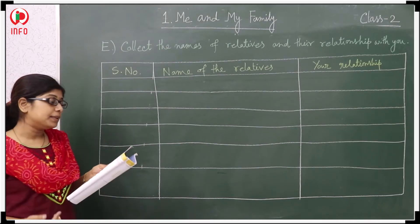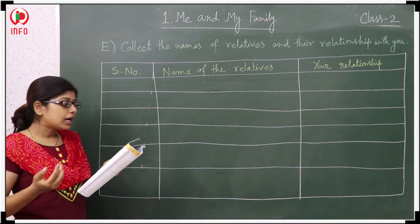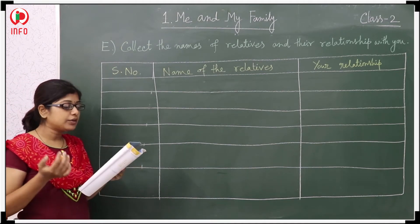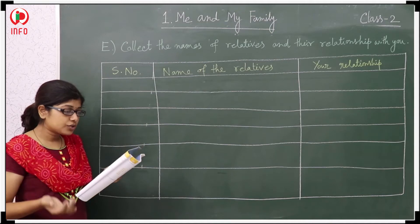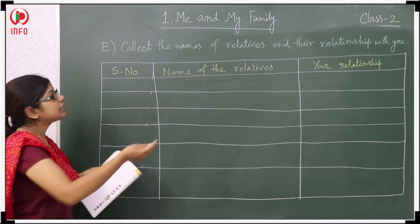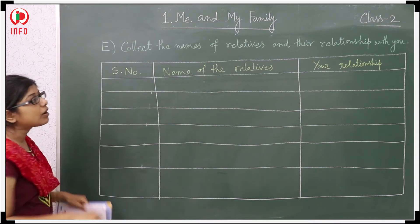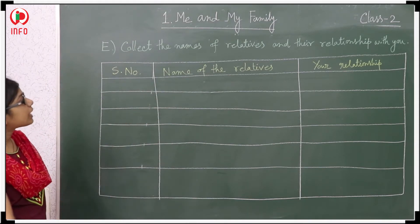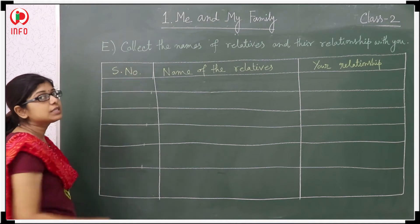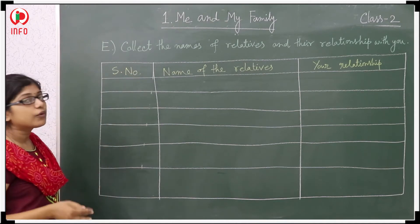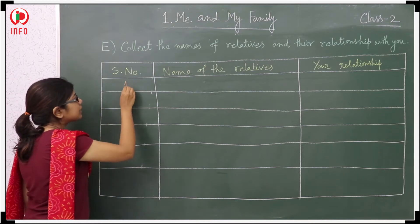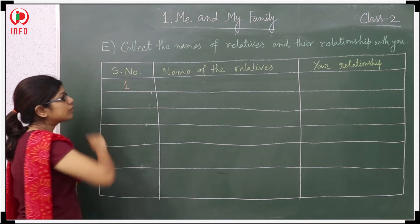Now the E-Beat. Collect the names of relatives and their relationships with you. In this table you are able to see that the serial number — 1, 2, 3, 4 — like that you have to write. So first one I am writing number 1.